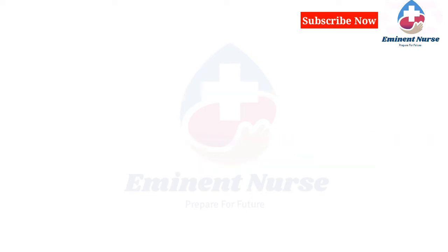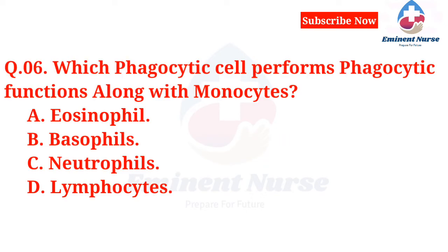Which phagocytic cell performs phagocytic functions along with monocytes? A. Eosinophil. B. Basophils. C. Neutrophils. D. Lymphocytes.